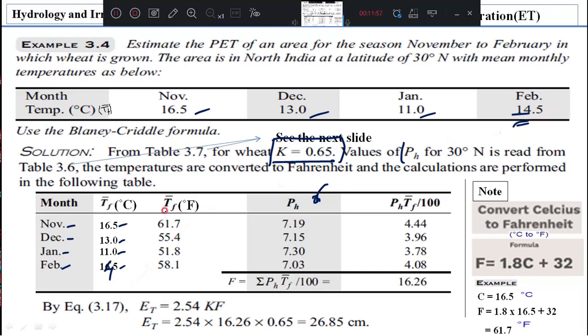Then after that, TF is there. TF means Fahrenheit. Because Blaney-Criddle, he wants in Fahrenheit. Therefore, here in the side, I have given you the conversion. Fahrenheit formula is F is equal to 1.8 C plus 32. Then you substitute here and you will get the temperature in terms of Fahrenheit.